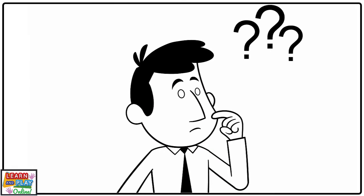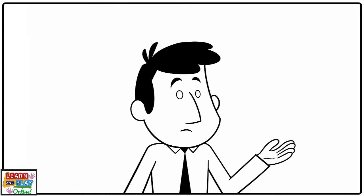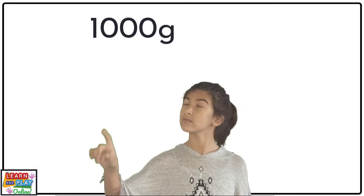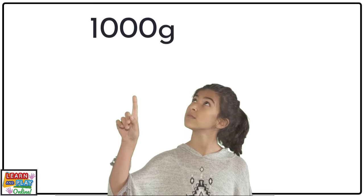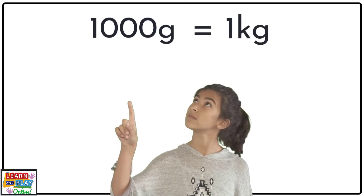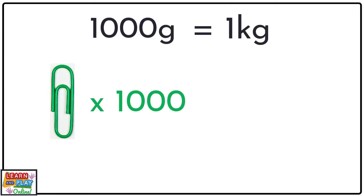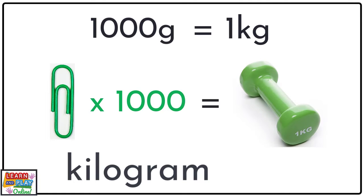At what point do we stop using grams to measure things though, when their mass becomes heavier? Here is a fact that will help you: if you have 1000 grams, that means you have 1 kilogram. If you can picture 1000 paper clips together, that will be about 1 kilogram.